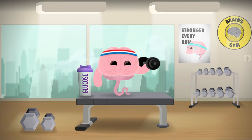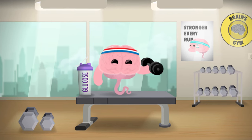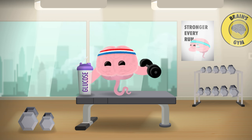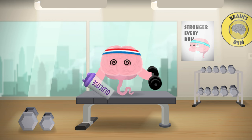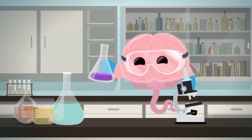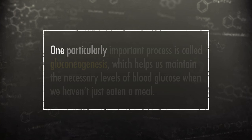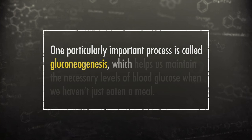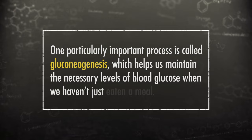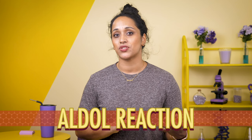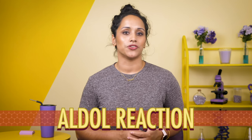Organic chemistry sure gives your brain a good workout. And glucose is the primary energy source used by our brains, so without it, we'd be in big, big trouble. Thankfully, our brains can get all the glucose they need through chemistry. One particularly important process is called gluconeogenesis, which helps us maintain the necessary levels of blood glucose when we haven't just eaten a meal. The whole process of gluconeogenesis is pretty interesting if you're a biochemistry nerd, but a key step that's relevant to this course is an aldol reaction.